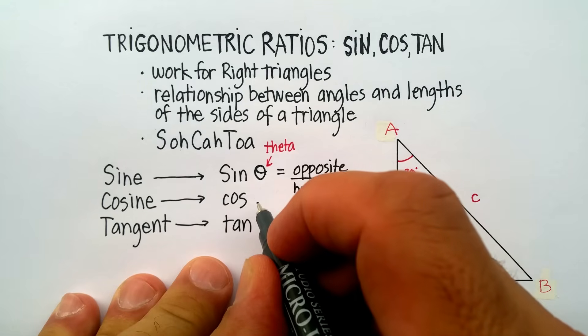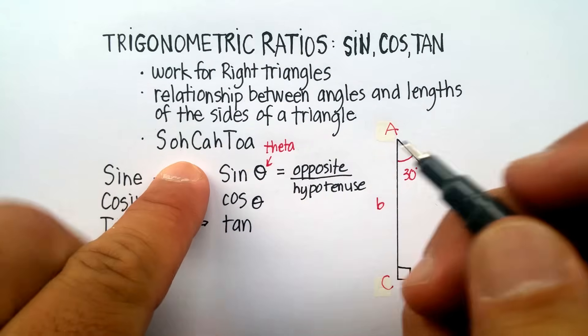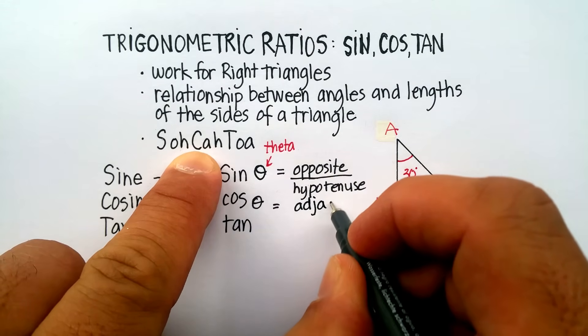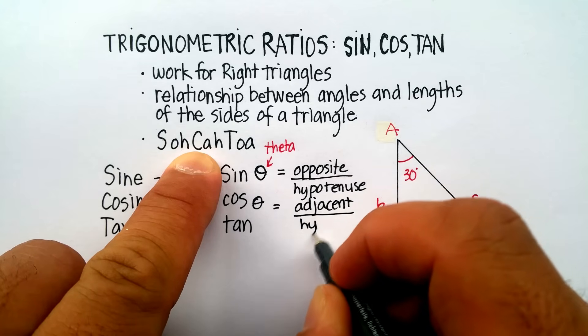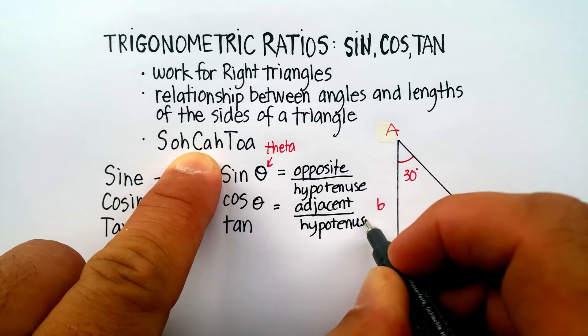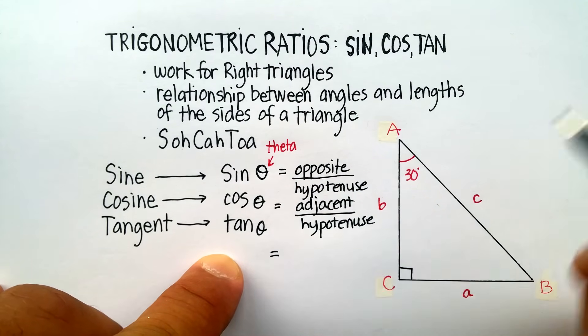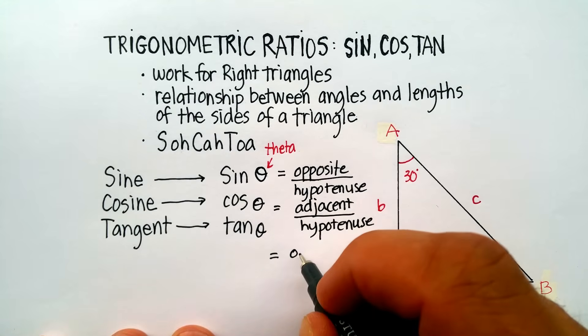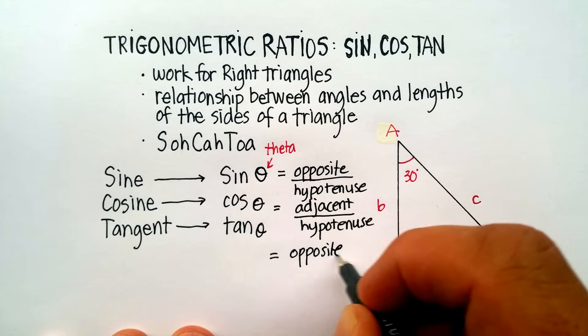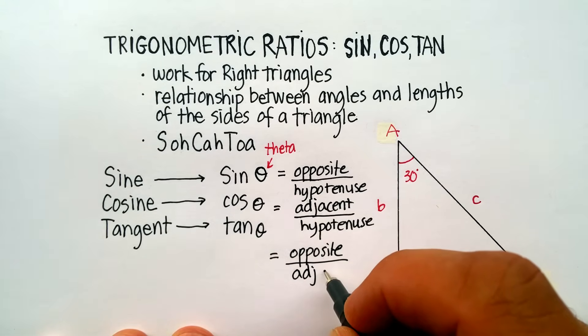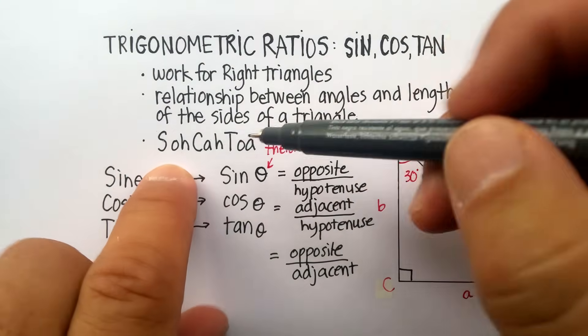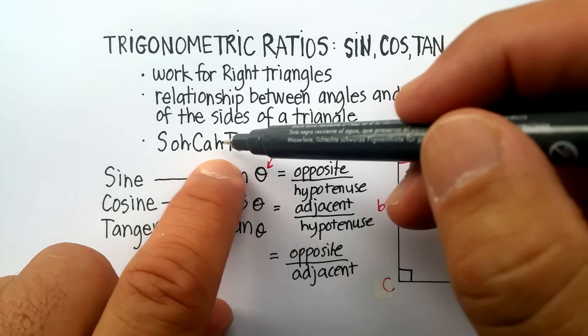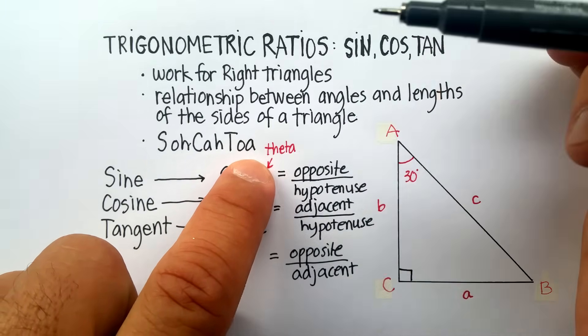Now cosine, and this is where you can start seeing where SohCahToa actually comes in, is equal to the adjacent side, right? And what does adjacent mean? Remember that adjacent means next to, so the adjacent over the hypotenuse, and the tangent, I'm just running out of room here a little bit, is always equal to the opposite side over the adjacent side. And this little mnemonic here, this little word, SohCahToa, helps you remember what that is. So sine is opposite over hypotenuse, cosine is adjacent over hypotenuse, and tangent is opposite over adjacent.